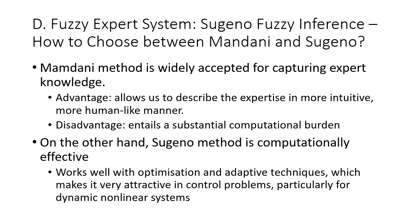So how do we choose between Mamdani and Sugeno? The Mamdani method is widely accepted because it can capture expert knowledge better, allowing us to describe expertise in a more intuitive and human-like manner. However, it entails a substantial computational burden. On the other hand, the Sugeno method is computationally effective and works well with optimization and adaptation problems, making it very attractive for control problems, particularly for dynamic non-linear systems.